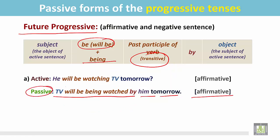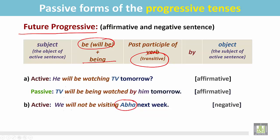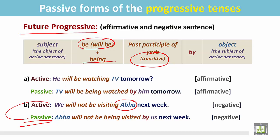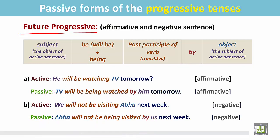Another example — a negative active sentence: 'We will not be visiting her next week.' The object of the verb 'visiting' is 'her.' In the passive, 'her' becomes the subject. The auxiliary verb 'will,' made negative with 'not,' gives 'will not be being,' followed by the past participle 'visited,' then 'by,' and the subject 'we' becomes the object 'us': 'Her will not be being visited by us next week.'